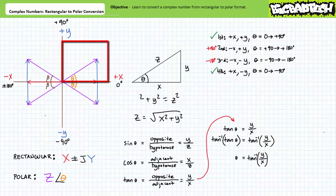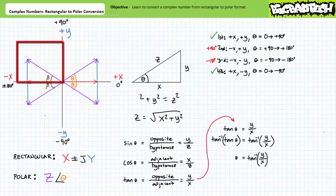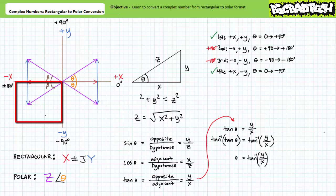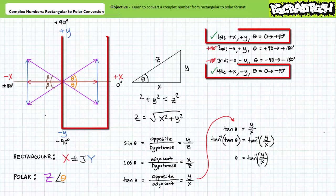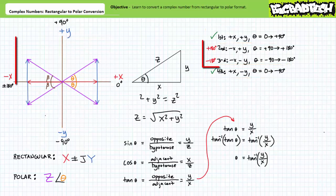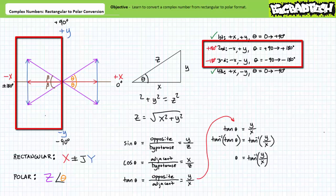Complex numbers with positive real x and positive imaginary y are in the first quadrant — angle between 0 and +90 degrees. Positive real x with negative imaginary y are in the fourth quadrant — angle between 0 and -90 degrees. Negative real x with positive imaginary y are in the second quadrant — angle between +90 and +180 degrees. Negative real x with negative imaginary y are in the third quadrant — angle between -90 and -180 degrees. The inverse tangent works reliably only in the first and fourth quadrants; active intervention is needed for the second and third.